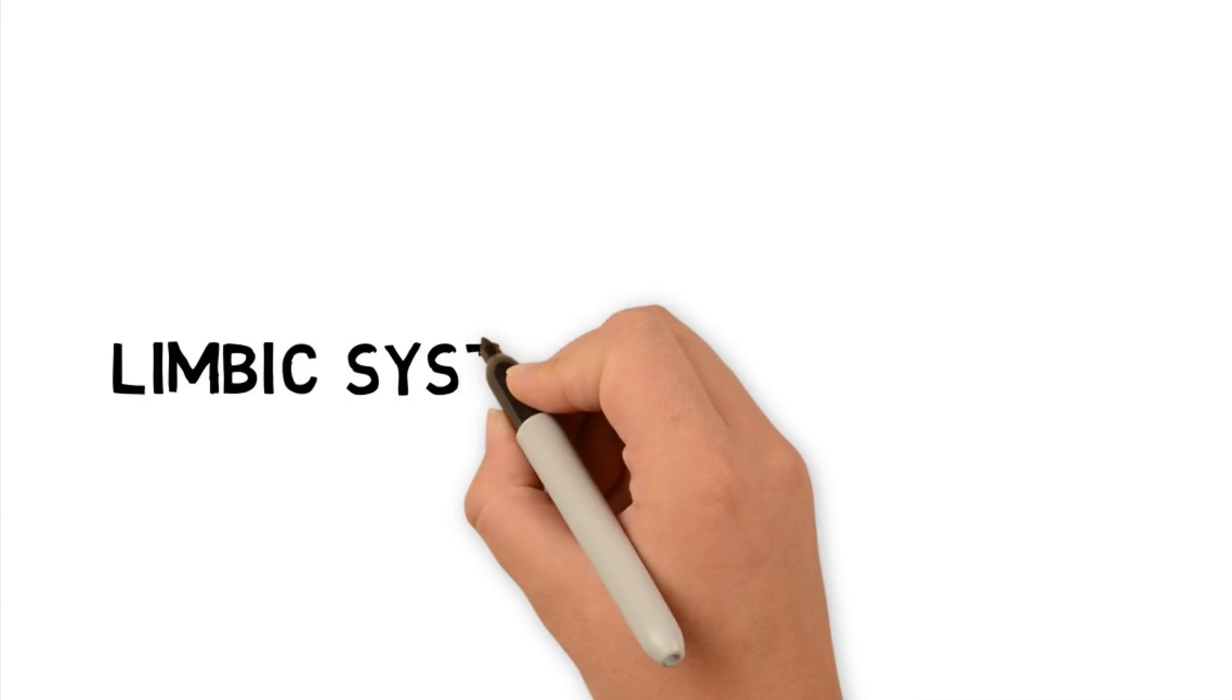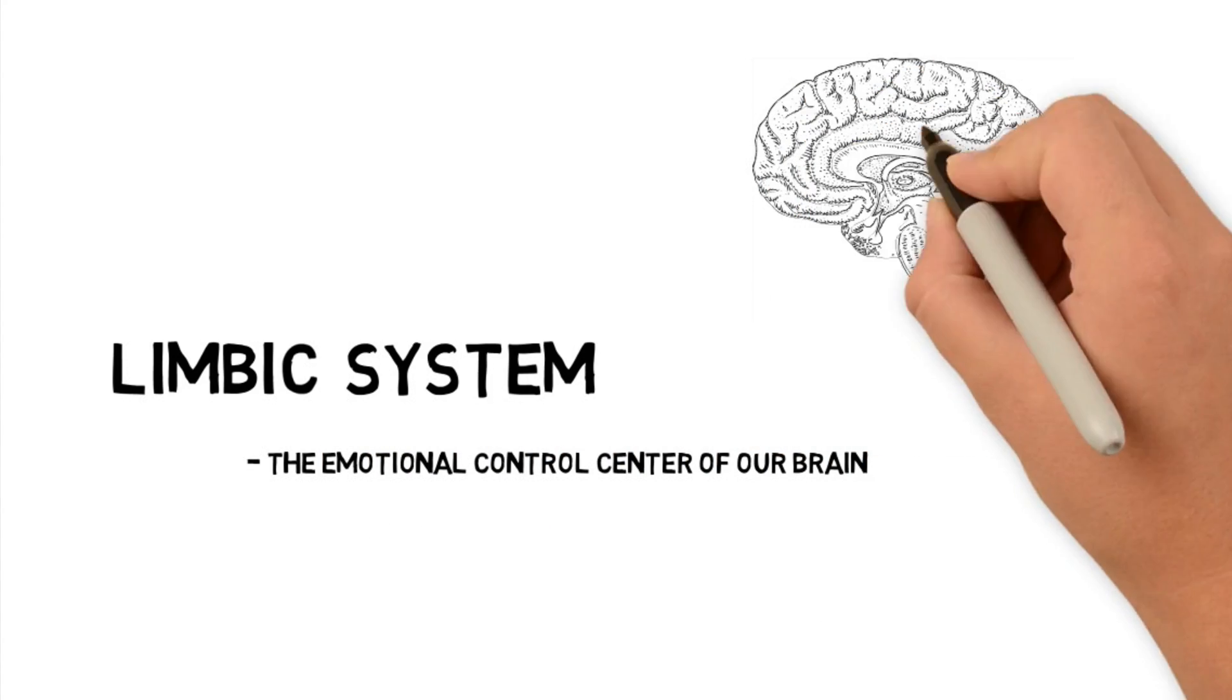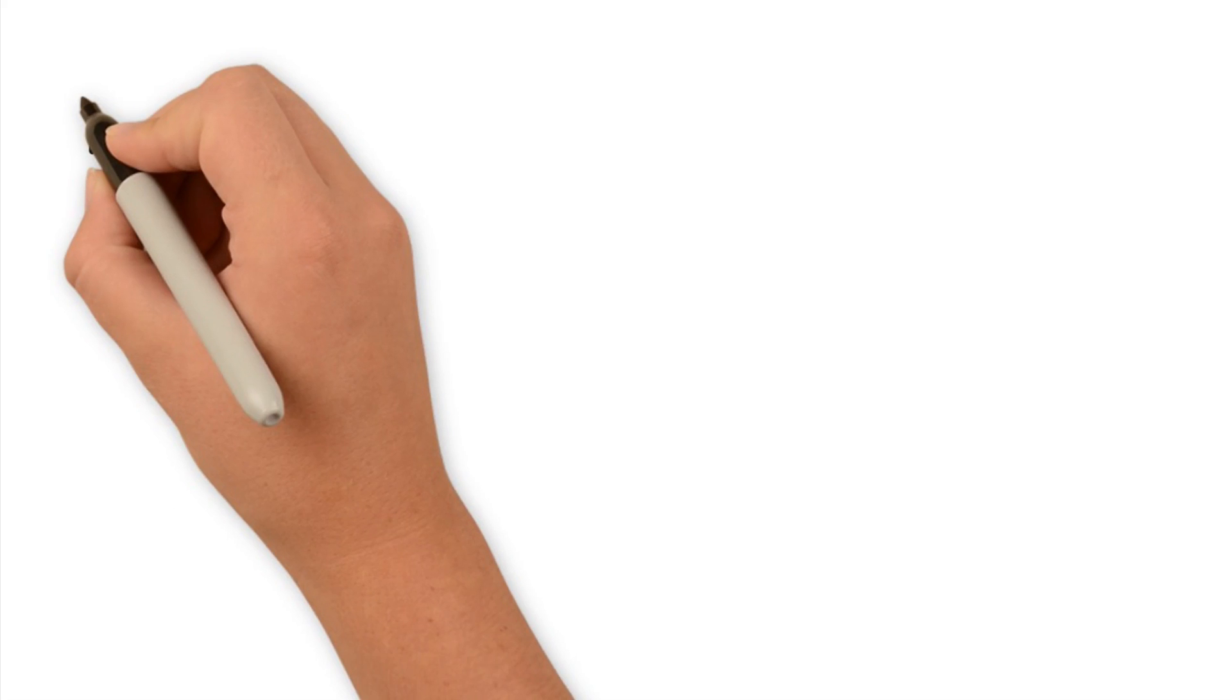Above the thalamus, we have the limbic system. The limbic system is often called the emotional control center of our brain. It is made up of four important structures.